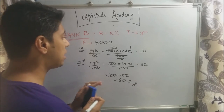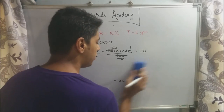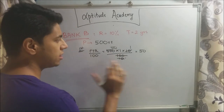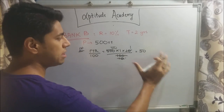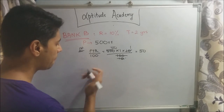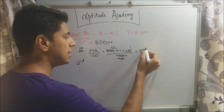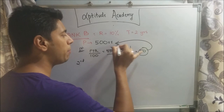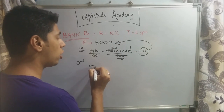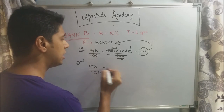Now let's see what happens with compound interest. For the first year, compound interest and simple interest give the same amount. But in the second year for compound interest, that 50 rupees gets added to your principal. So your new principal is not 500 — it becomes 550 rupees.